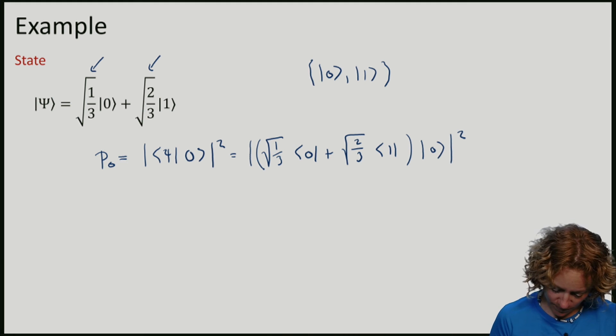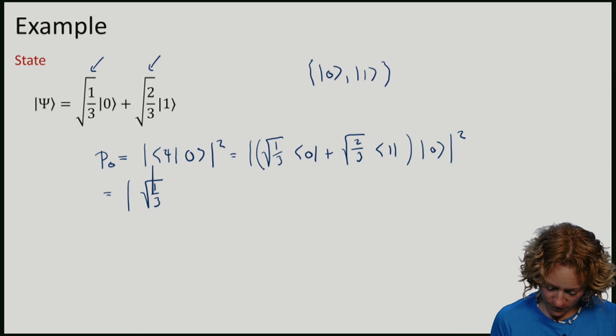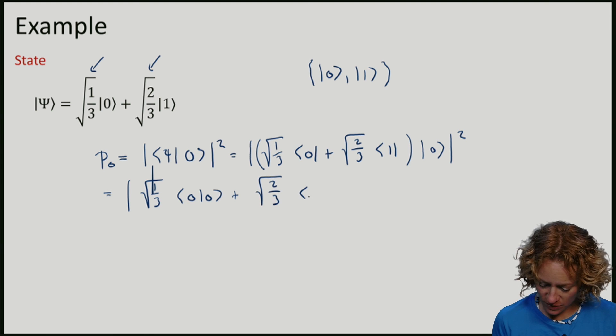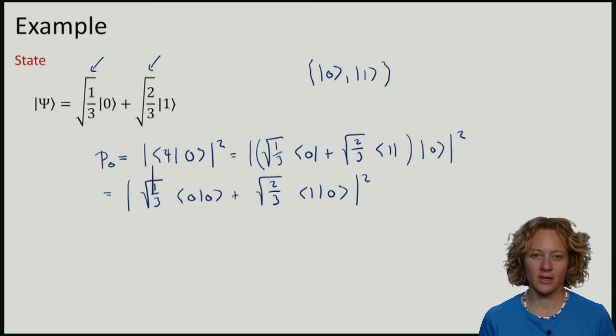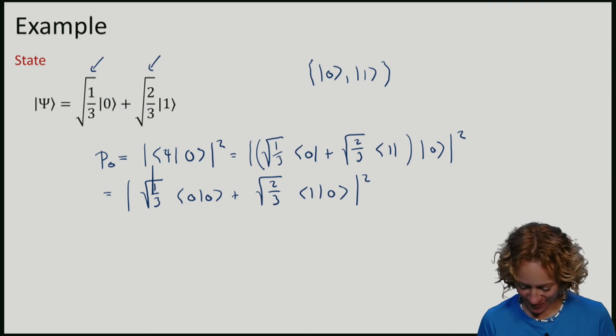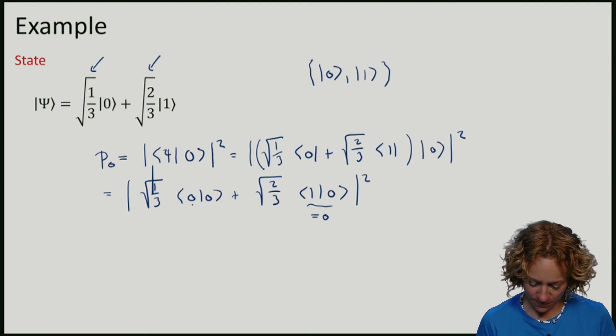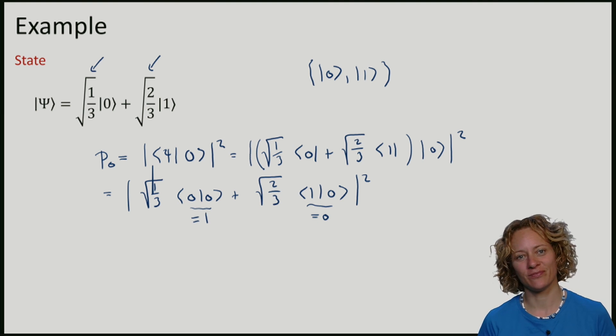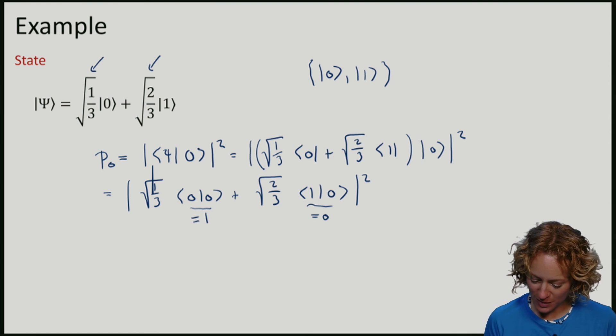So we have 1 third times 0 inner product with 0, plus 2 thirds times 1 inner product with 0. So remember again that the elements of the standard basis are orthogonal. So this here is 0, and because all vectors have length 1, this is 1. So we see that the probability is just 1 third.